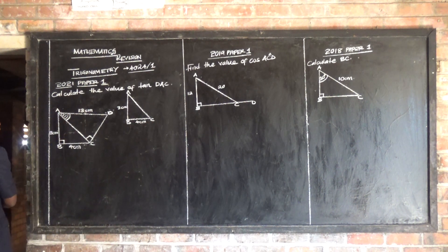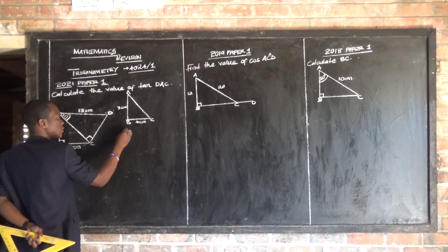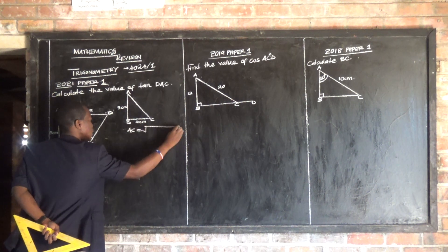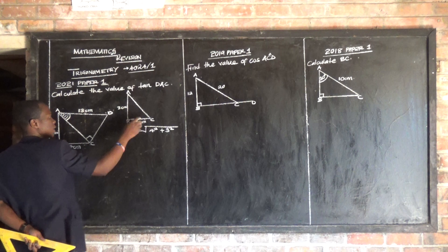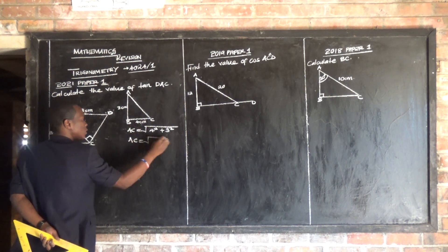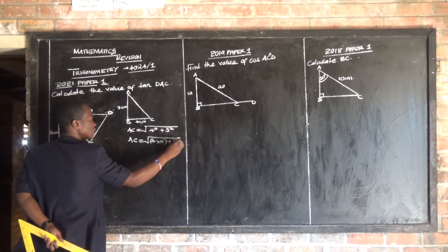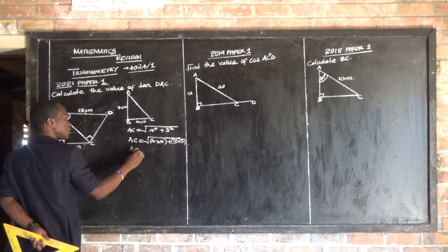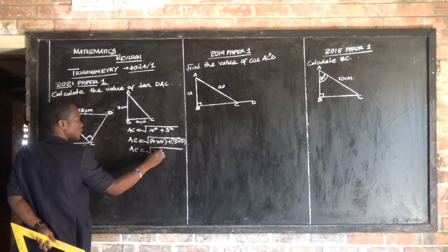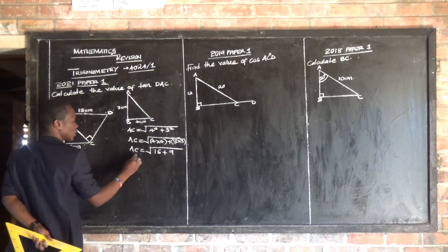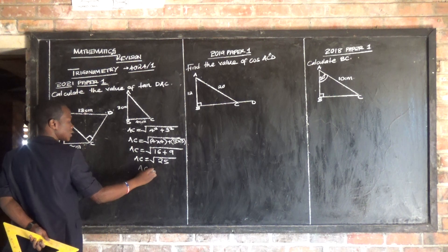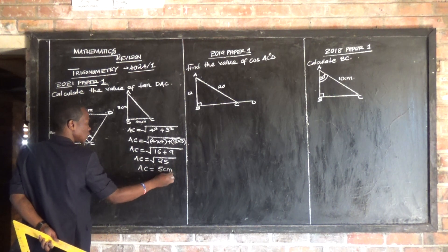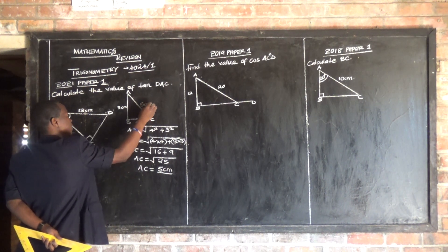So we can use Pythagoras' theorem to find AC. AC is equal to the square root of four squared plus three squared. Four squared is 16, plus three squared is 9. So AC is equal to the square root of 16 plus 9, which is 25. The square root of 25 is five centimetres. So this side is five centimetres.